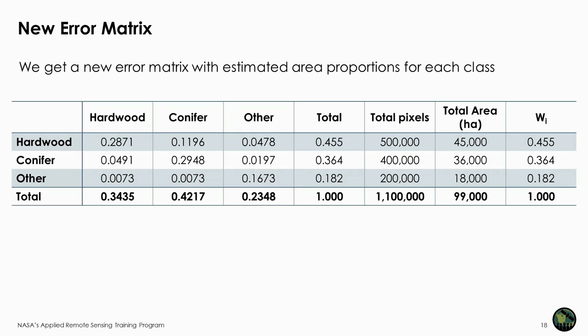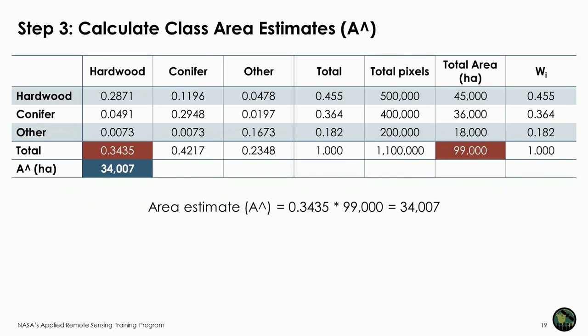This new error matrix contains all the information needed for estimating the area of each class. The estimators are the column totals you just calculated. The next step is to calculate the unbiased class area estimates in hectares by multiplying the total proportion in each column by the total area in hectares. For example, multiplying the hardwood total estimated area proportion of 0.3435 by the total area of 99,000 hectares gives 34,007 hectares of hardwood.